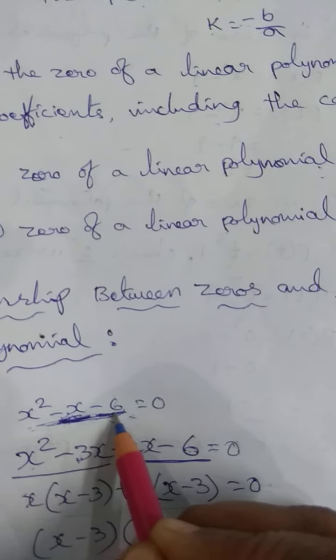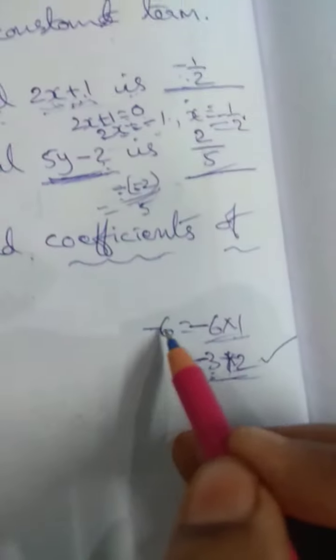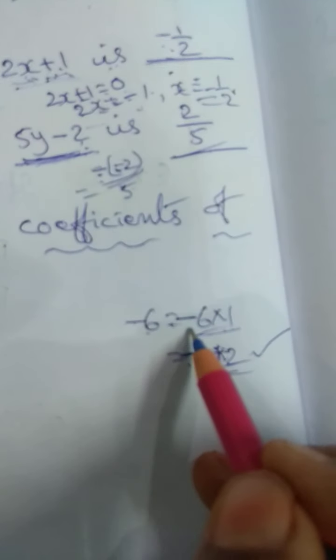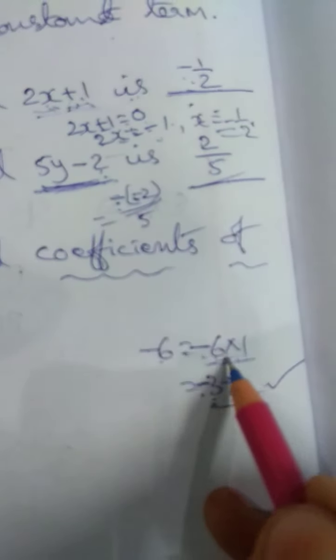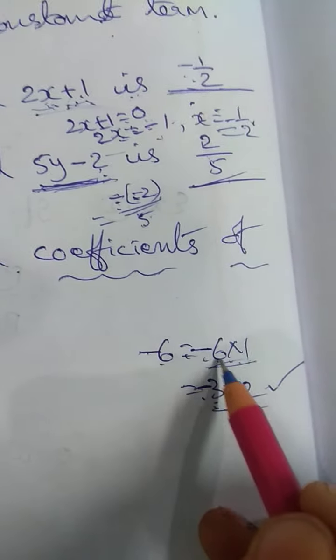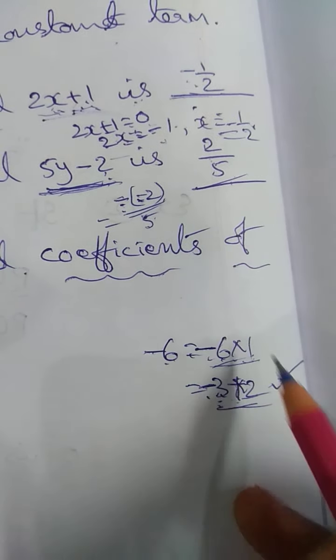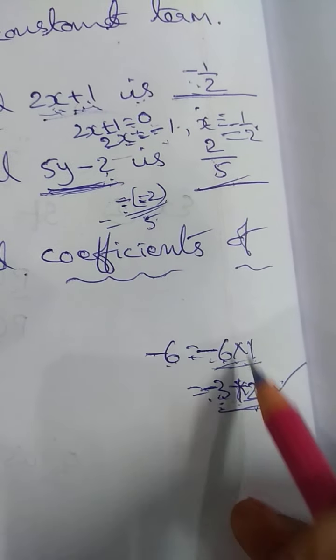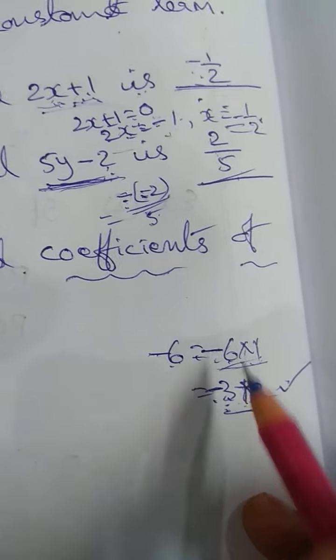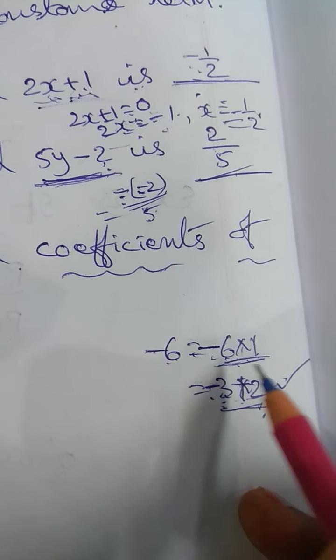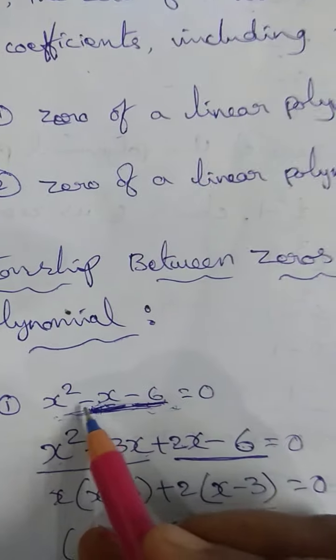We need to find the factors of -6. The factors of -6 are: -6×1, 6×1, -3×2, 3×2. We apply the pair whose sum matches the middle term. Subtraction gives us the right combination.